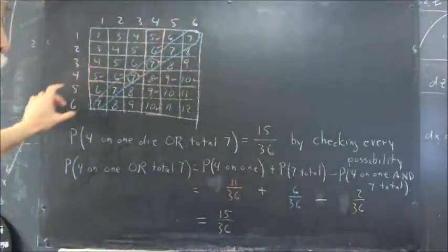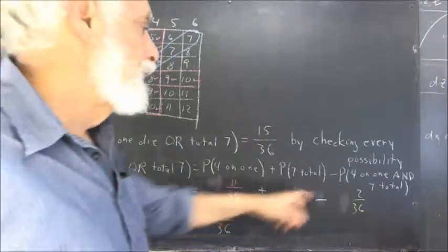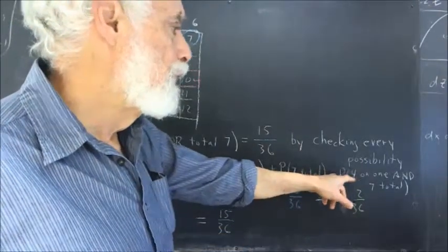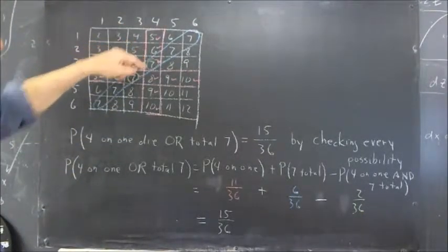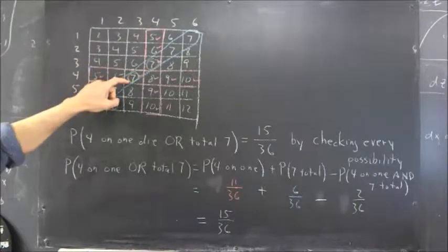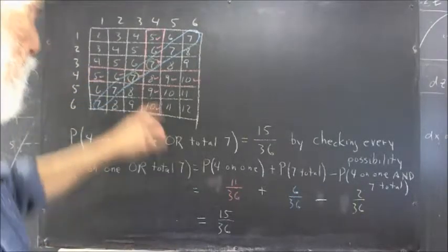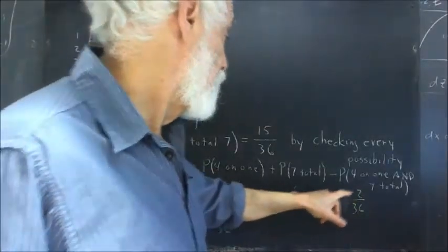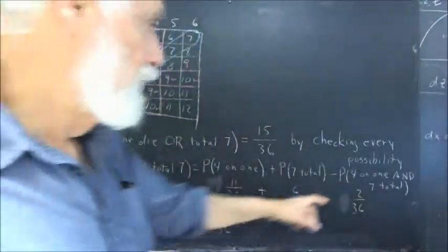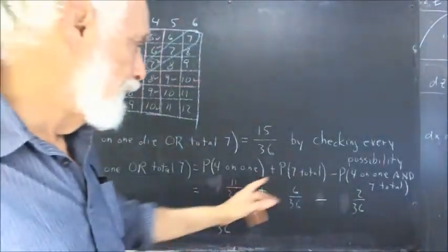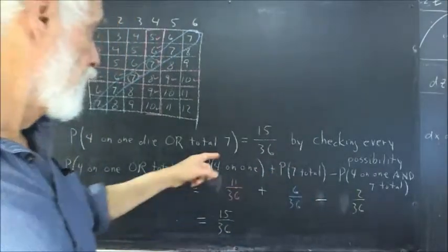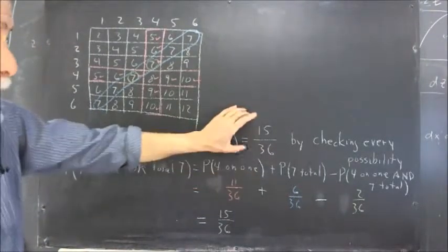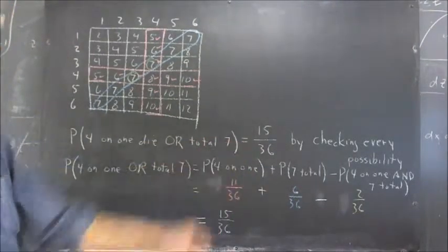Probability of 7 total, very clearly there are just 6 of those. And then we subtract the probability of a 4 on one and a 7 total. Here we've got a 4 on one die and a total of 7. Here we've got a 4 on the other die and a total of 7. So, we've got to subtract those two outcomes. So, the probability of that is 2 out of 36. So, when we add that up, we get 11 and 6 minus 2. That gives us 17 minus 2, 15 out of 36. And there is our probability. And it agrees with the probability we got when we checked every possibility.